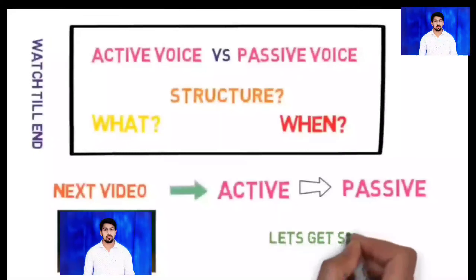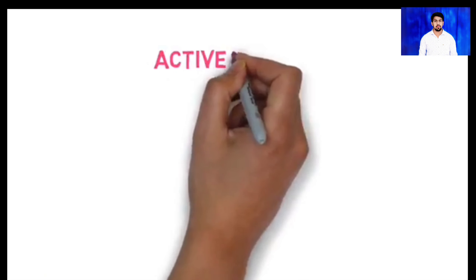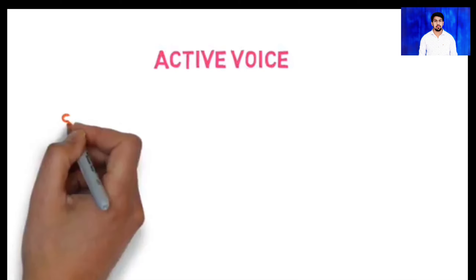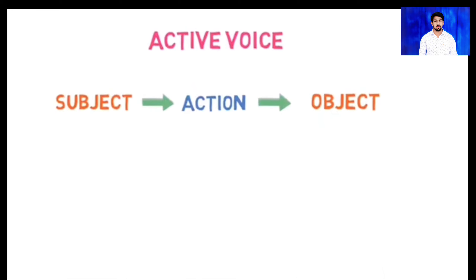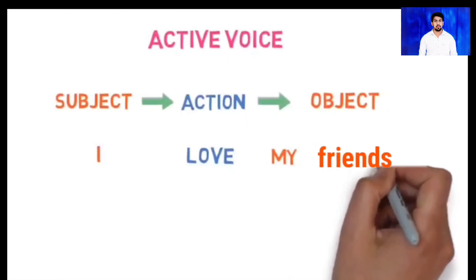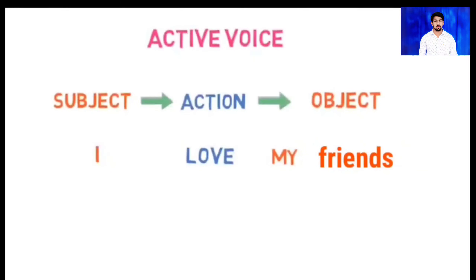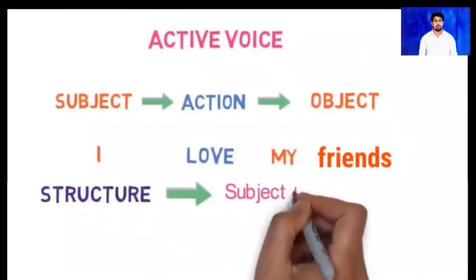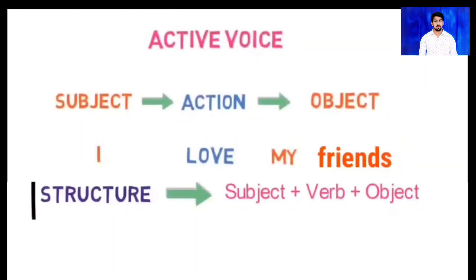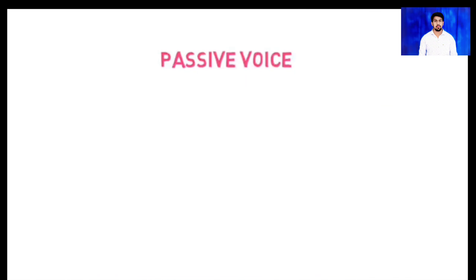So let's get started. In active voice, the subject performs the action and the object receives the action. For example: 'I love my friends.' Here the subject is 'I', the action is 'love', and 'my friends' is receiving the action. In active voice the sentence structure is straightforward: Subject + Verb + Object. Remember this structure properly.